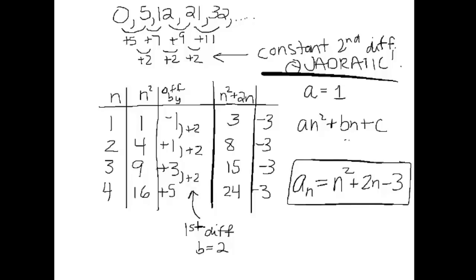We can verify: substituting n equals 1, we get 1 squared plus 2 times 1 minus 3, which is 1 plus 2 minus 3, equals 0. That matches the first term. We could do a whole column showing that, just to make sure we were right.